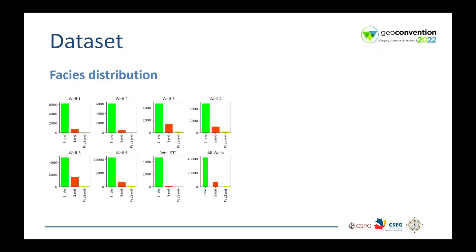Here we have the facies distribution per well. Some wells do not have paste sand, like well 2, and some of them have small values. In the right bottom corner, we have the facies distribution across all wells. The amount of shale in the zone of interest is huge, while paste sand is small.